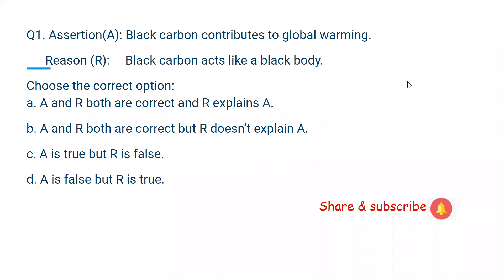First question. Assertion A: Black carbon contributes to global warming. Reason R: Black carbon acts like a black body. Black carbon contributes to global warming because it acts like a black body — it absorbs all the radiation and doesn't let that radiation out; it absorbs all incoming radiation. So A is correct and R is correct, and R explains A. The correct option is A.